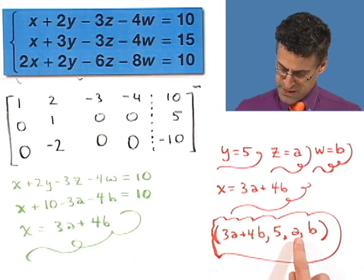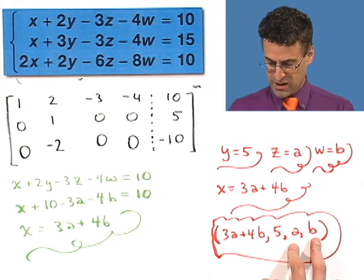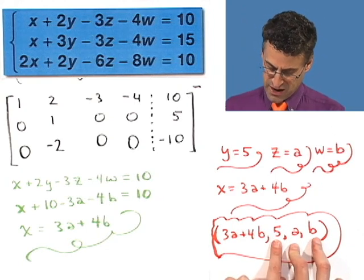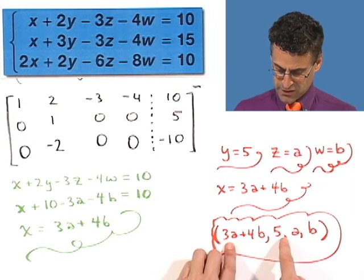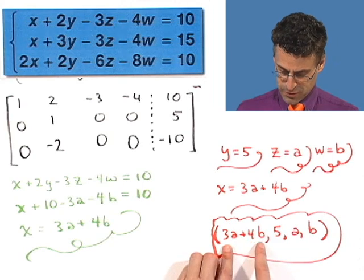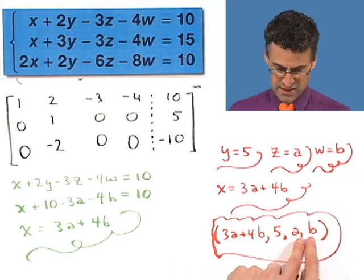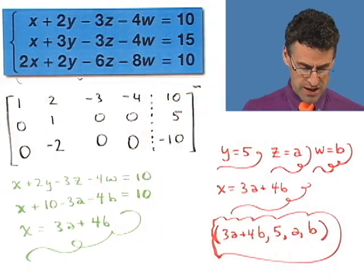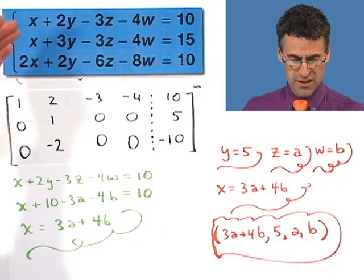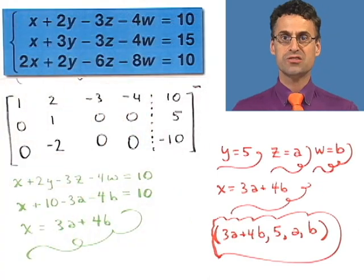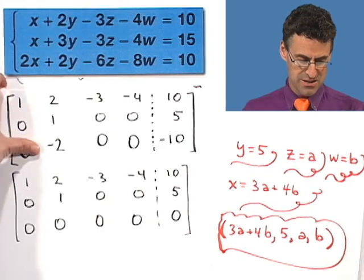Do you see it? Just pick a value for a, anything you want, it's free. Pick a value for b, anything you want, it's free. The y will always be 5, but once you have the a and the b, that will determine the x. And if you plug in these four values, 3a plus 4b, 5, a, b, for x, y, z, w, into the original equation, you will see in any one of these three equations that, in fact, the identity will hold. So this actually works out. So here's an example where we have infinitely many solutions.